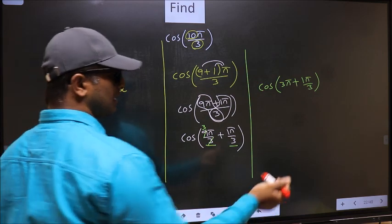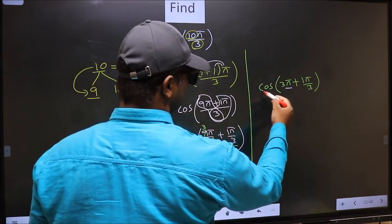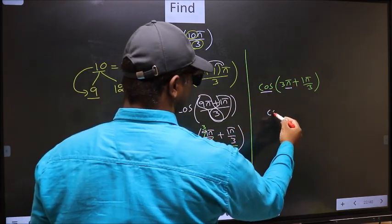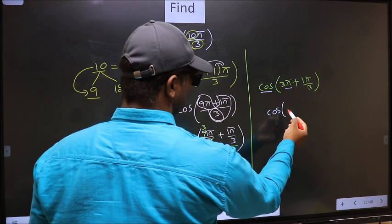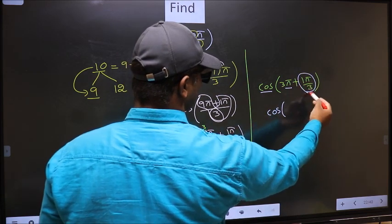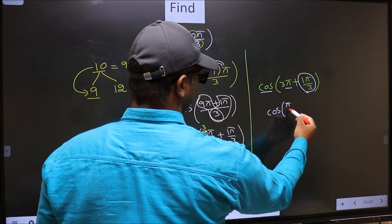Next, here we have π, so cos is not going to change. It will remain cos. And inside, we get this angle, π by 3.